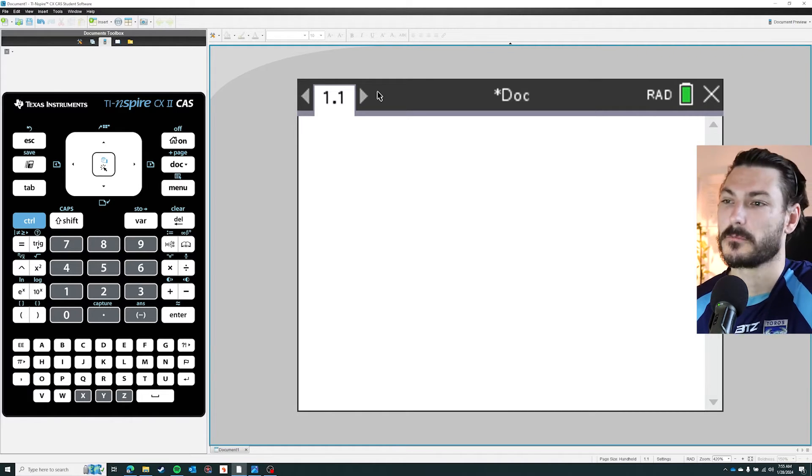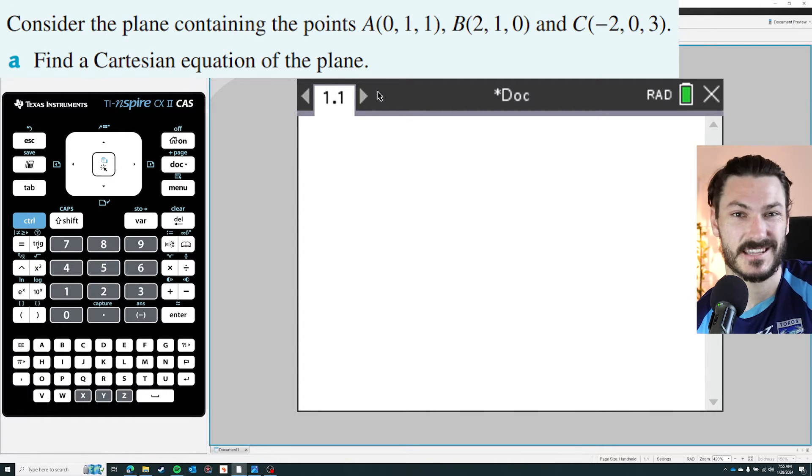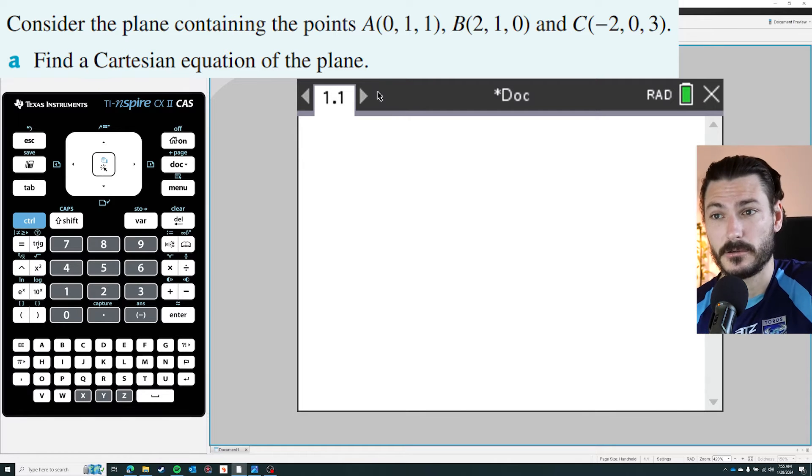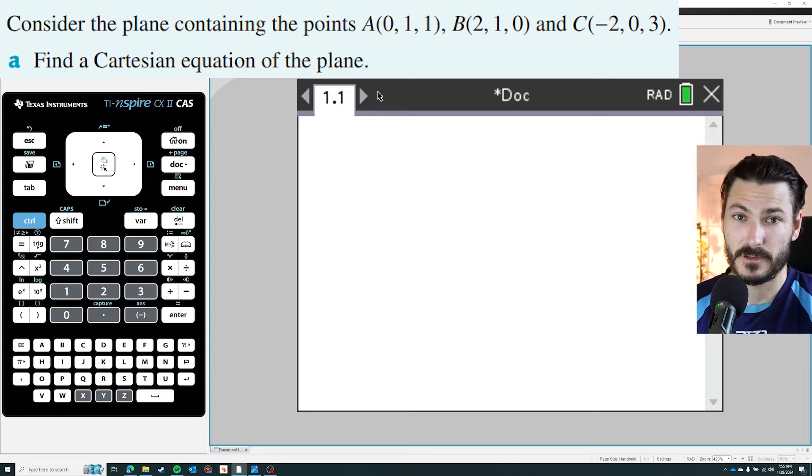On the screen I've got a question here. I'm going to use this as an example for all of the different types of vector stuff on the calculator I want to show you. If you want to see this question from start to finish properly without using the calculator, feel free to click on the video that's on screen now. I've got an example going through that.